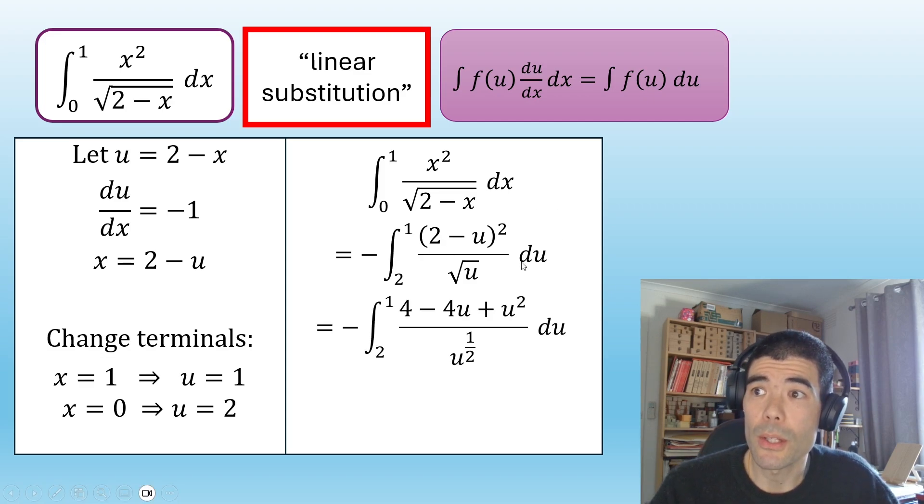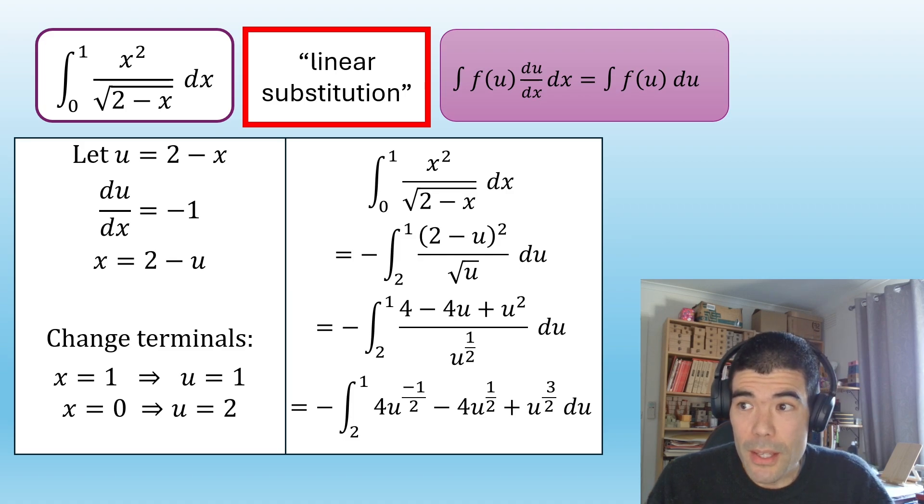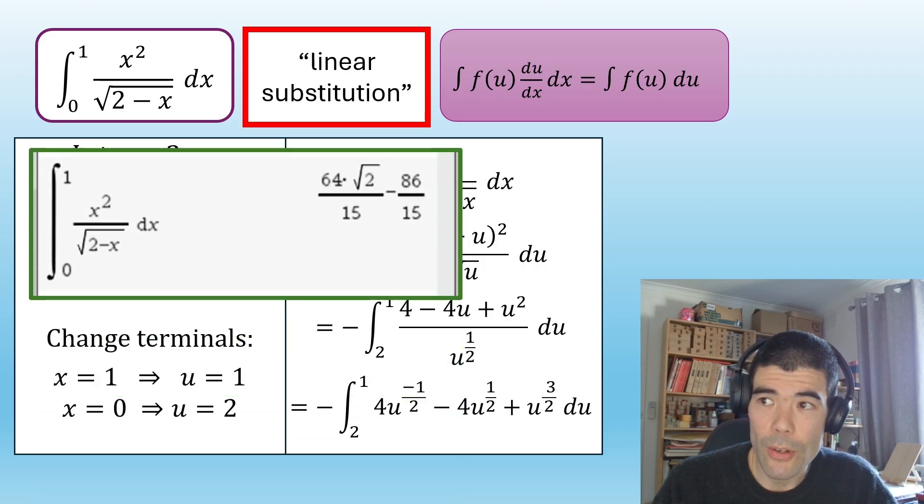Once we have that, we can expand the brackets on the top and simplify by dividing through all these terms by u to the half. Then it's going to simplify to this. So from there, it's really just a methods integral. I'm not saying that it's particularly easy, especially when we're going to sub in the terminals, like subbing in 2 and evaluating those in terms of roots. But I won't go through the arithmetic here. If you do have a go at it, this should be your answer. Okay, good luck.